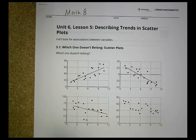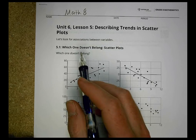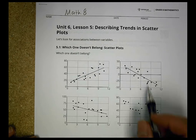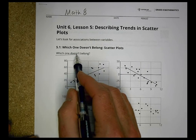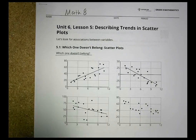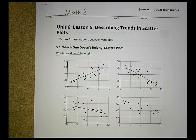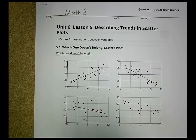This is Math 8, Unit 6, Lesson 5: Describing Trends in Scatter Plots. We're looking for associations between variables. We have four graphs and the question asks which one doesn't belong. You could look at all four of them and you'll probably notice something different about each one for why maybe each one doesn't belong with the others. Take a moment with the class and take a look.